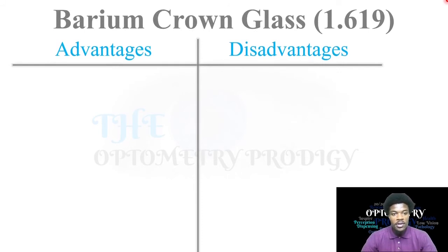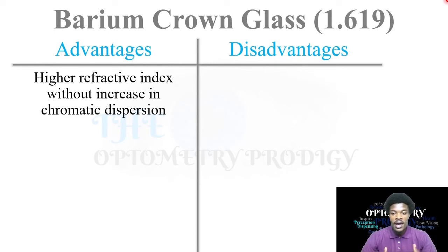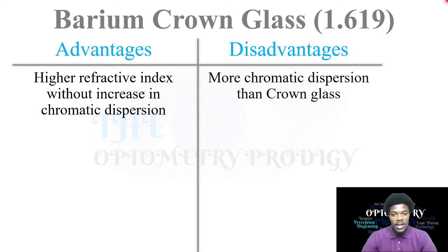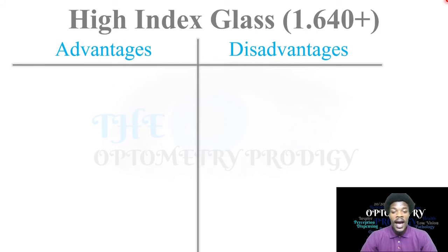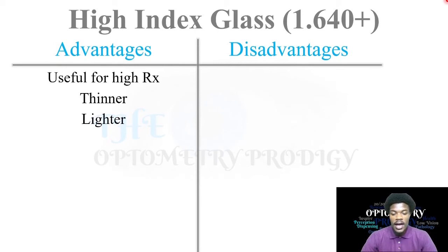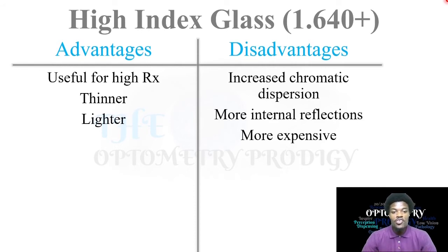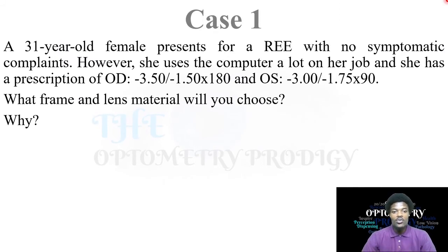Barium crown glass has a refractive index of 1.619 — a high refractive index — and increasing chromatic dispersion does not really occur. However, comparing ophthalmic crown glass to barium crown glass, there is more chromatic dispersion in barium crown. High index glass at 1.64 and above: advantages are useful for high prescriptions, thinner, and usually lighter. Disadvantages are increased chromatic dispersion, more internal reflections, and they are usually more expensive.